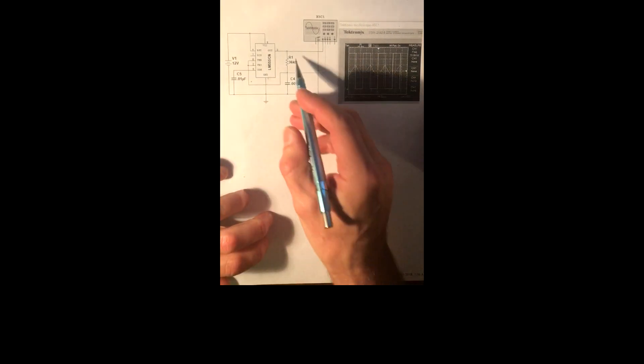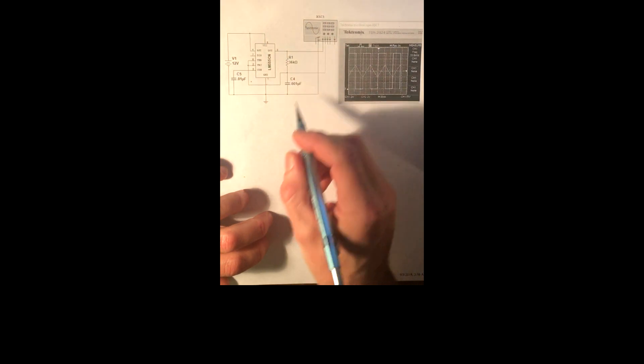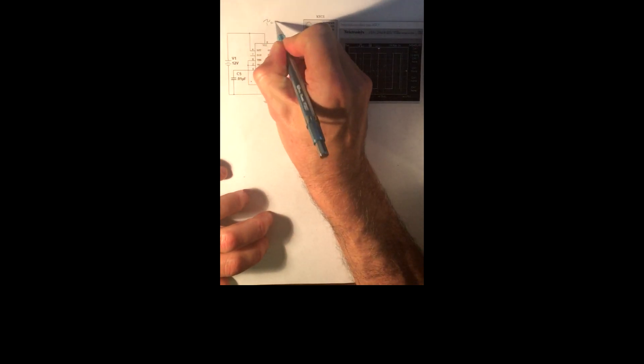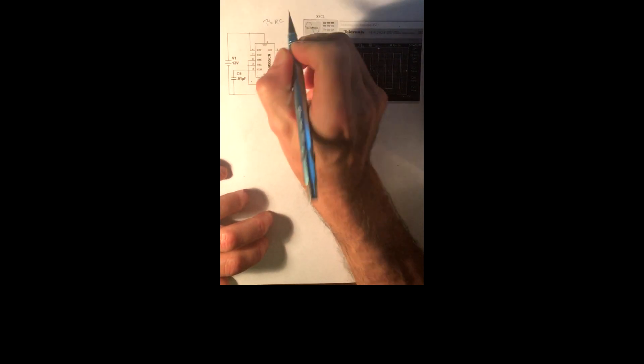Now, if all you want is the circuit, then this is it — that's all you need. The frequency, or really all you need, is tau equal to RC. From that, you can derive the frequency, and we'll show you that in just a second.